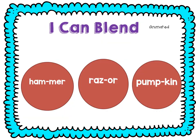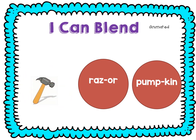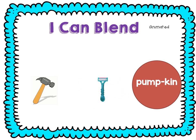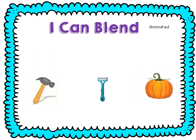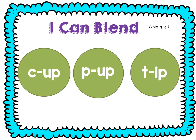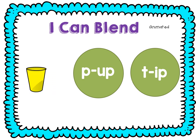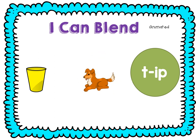Let's blend some words — see if you can make this into a word. Ready? Ham — mer — hammer. Raise — er — razor. Pump — kin — pumpkin. See if you can blend the onset and rhyme: C — up — cup. P — up — pup. T — ip — tip.